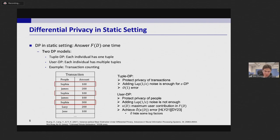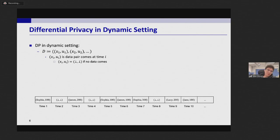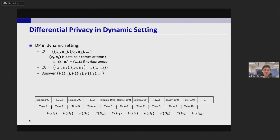Now let's consider the dynamic setting. Here the input is a stream where the item xi belonging to user ui comes at time i, and we also allow no data comes at some time. The prefix dataset Di is all data come on or before time i, and we answer the query at each time.